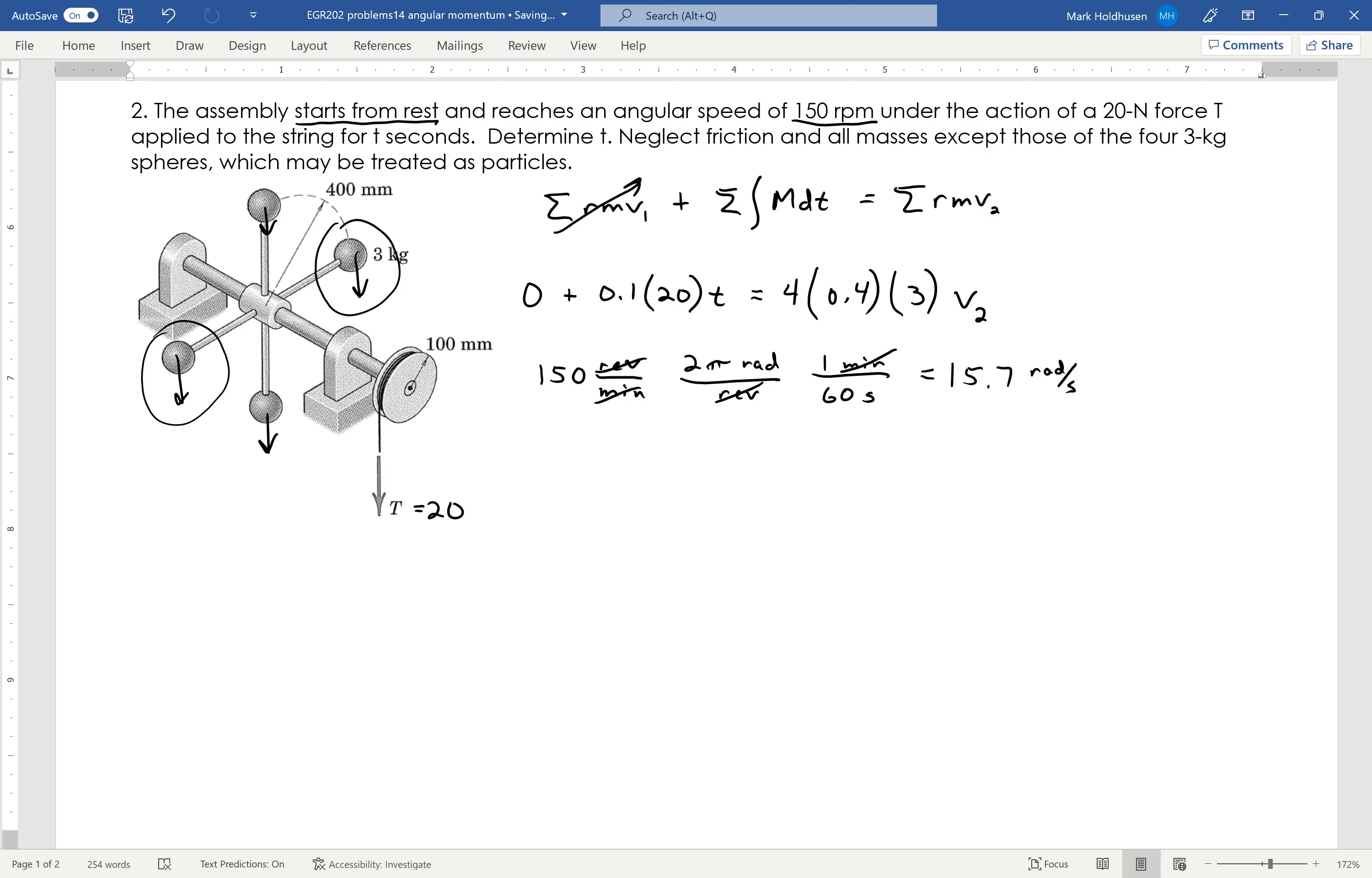What I know is that my arc length is basically R times theta. Take a time derivative of that. This is going to give me my velocity is R times theta dot, because R does not change.